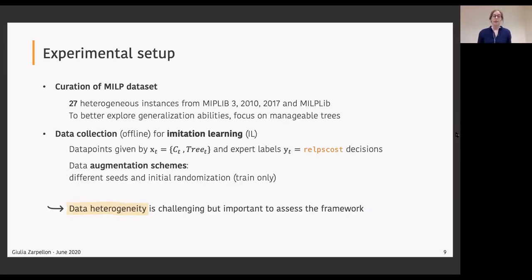We also put in place some data augmentation schemes. Our instances are run on different seeds, and also we produce some initial randomization in the tree so that we can diversify better the input spaces for our policies. What we observe is data that is highly heterogeneous. This heterogeneity, which we wanted to work with, is challenging on a practical level, but it's also very important to assess not only the framework that we put in place, the features and the architecture, but also the hypothesis that was behind it.